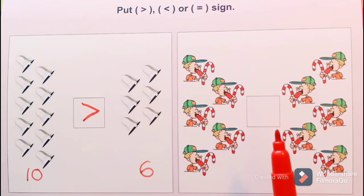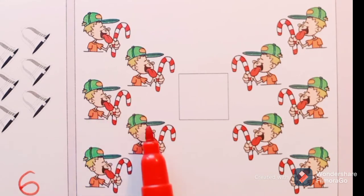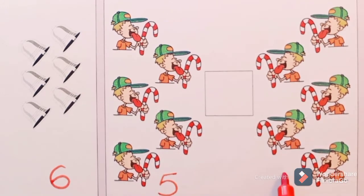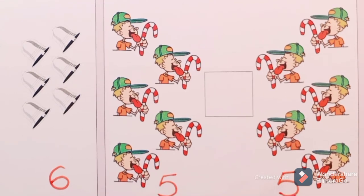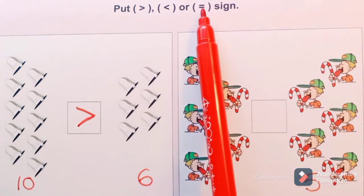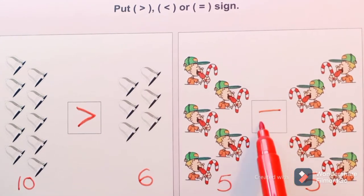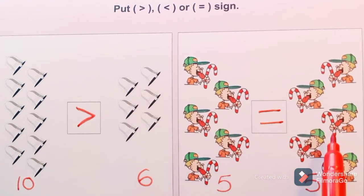Now look at the second picture — there is a boy. There are five boys here. And here also one, two, three, four, five — there are five boys. Are these numbers same or different? They are same only. For same numbers, we have to use equal to symbol. Here we have the same number of pictures on either side of this box. Five is equal to five.